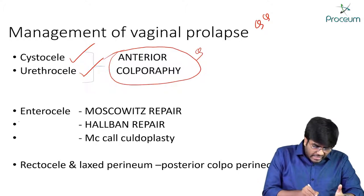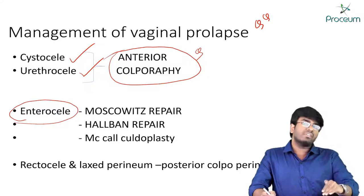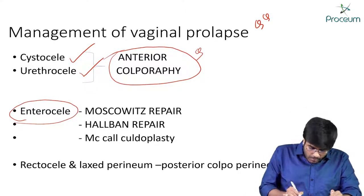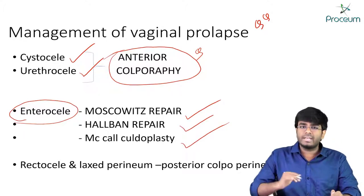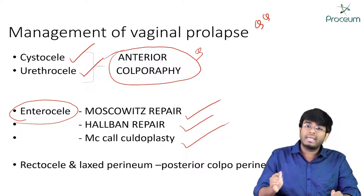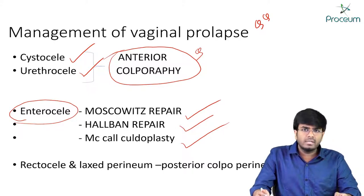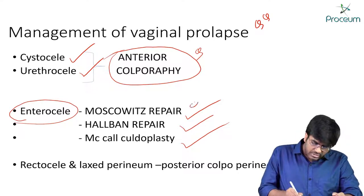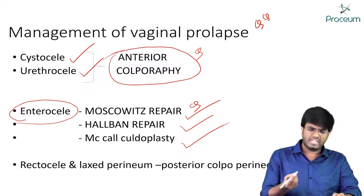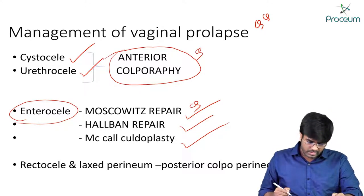Whenever there is an enterocele — involving the upper one-third of the posterior vaginal wall — you will perform Moschowitz repair, or Halban repair, or McCall culdoplasty. Note that Moschowitz repair is done for enterocele, not rectocele, not urethrocele or cystocele. Similarly, Halban repair and McCall culdoplasty are also done for enterocele.